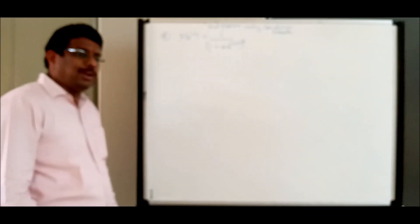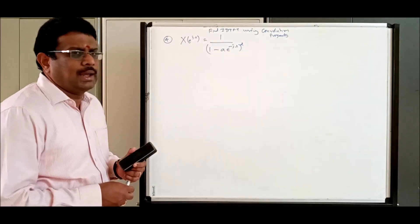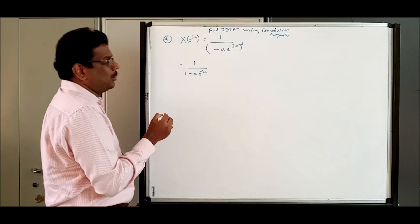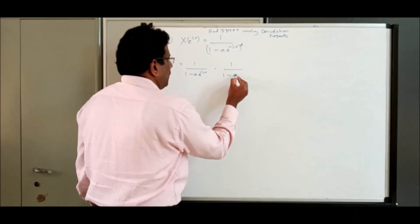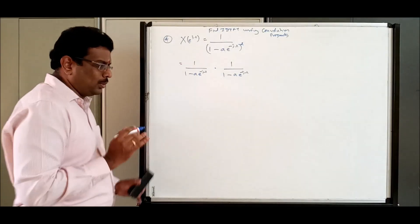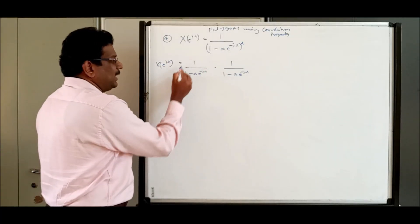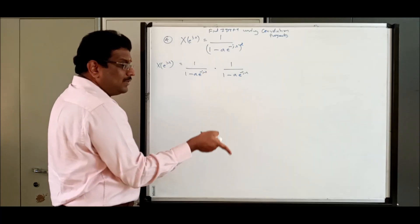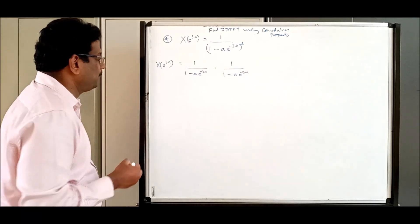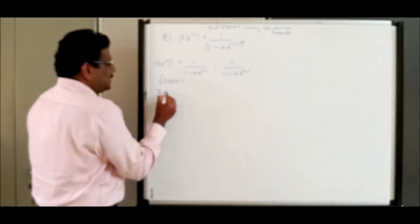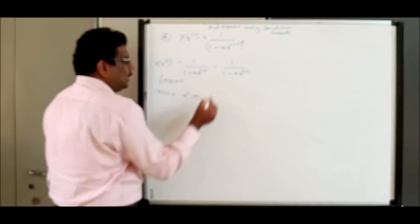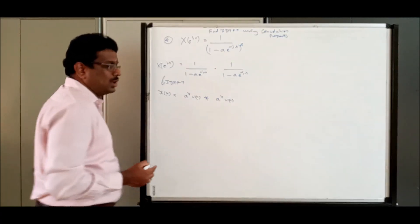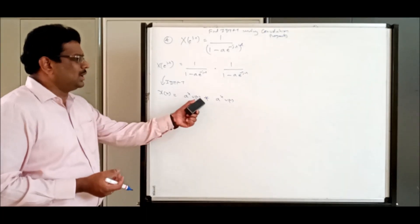Now find the IDTFT using the convolution property. If I break 1 by (1 minus a·e^(-jω))² into two factors, I get 1 by (1 minus a·e^(-jω)) multiplied by 1 by (1 minus a·e^(-jω)). Since multiplication in frequency domain corresponds to convolution in time domain, the IDTFT of the product is the convolution of a^n u(n) with a^n u(n).